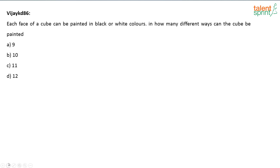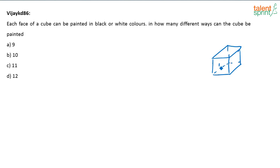There are two ways to approach this question, depending upon what is exactly asked. If the sides of the cube are distinct — say this is side 1, this is side 2, this is side 3 — and each side is clearly distinct, how will you solve it?